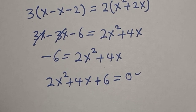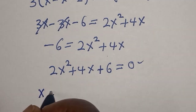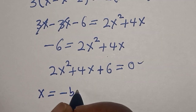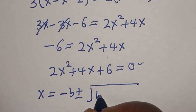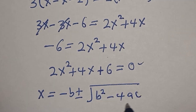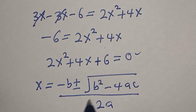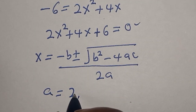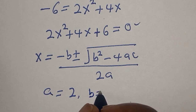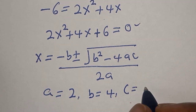And this is a quadratic equation. Let's solve this using the quadratic general formula. The quadratic general formula is given as x is equal to minus b plus or minus square root of b squared minus 4ac, divided by 2a. Then from this equation, a is equal to 2, b is equal to 4, and c is equal to 6.